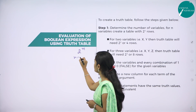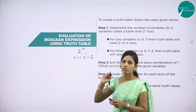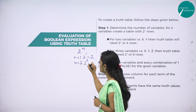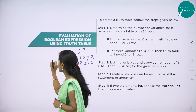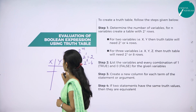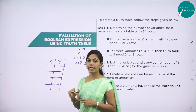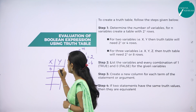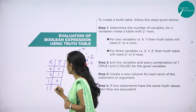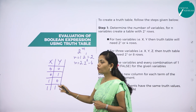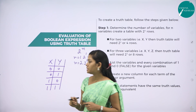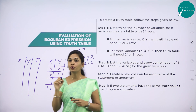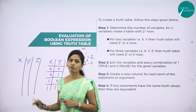If n equals 1, then 2 power 1 equals 2, so we have only two values. If n equals 2, then 2 power 2 equals 4, so for two variables the truth table will need 4 rows: (0,0), (0,1), (1,0), (1,1). For three variables x, y, z, we require 2 power 3, which equals 8 rows.